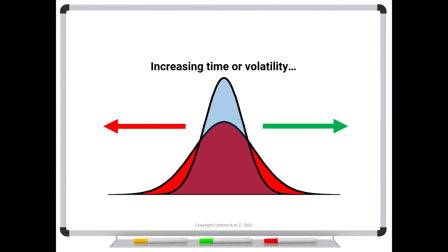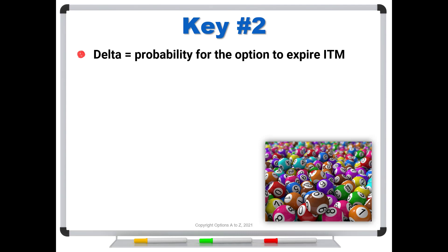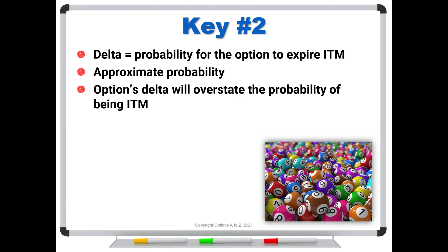As a side note, time and volatility will not affect your curves to the same degree — doubling time or doubling volatility won't have identical effects on your deltas. But they both move deltas in the same direction. The second key is that delta is the probability for an option to expire in the money. It's an approximate probability, and technically an option's delta will overstate that probability slightly. But as a rough gauge, understanding delta as that probability helps you see how deltas change with time and volatility.